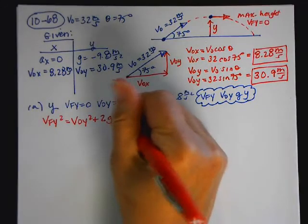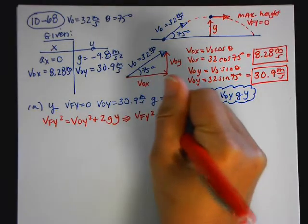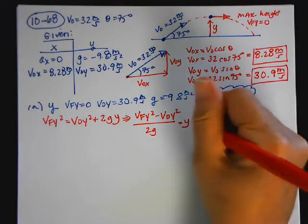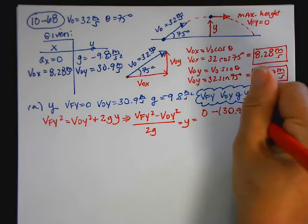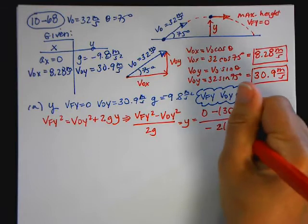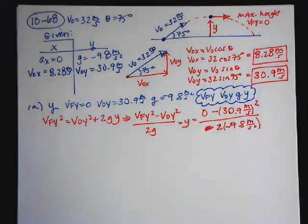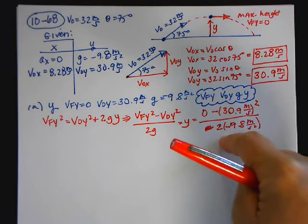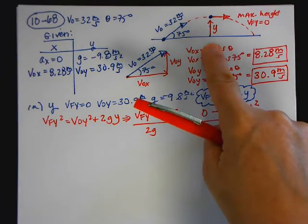I'm going to rearrange the equation to solve for the unknown: Y equals V-F-Y squared minus V-naught Y squared over 2G. Substituting in values: 0 minus 30.9 meters per second, squared, over negative 2 times negative 9.8 meters per second squared. The negative in the numerator cancels with the negative in the denominator, so I get a positive value for Y, which matches the picture.